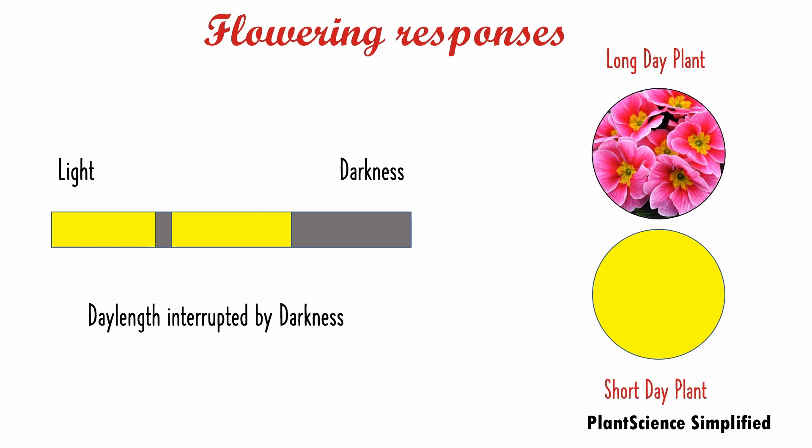The fourth condition, where the day length is interrupted by darkness, will result in flowering only in long day plants — that means long day plants will flower uninterruptedly — but it does not show flowering in short day plants. These are all the various responses of plants to different types of photoperiods.